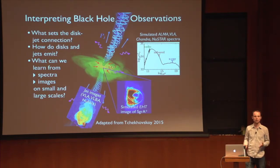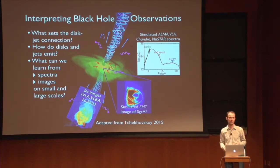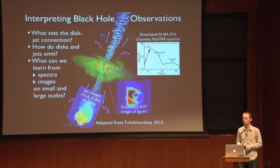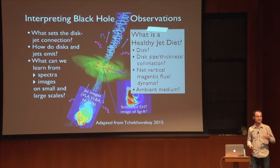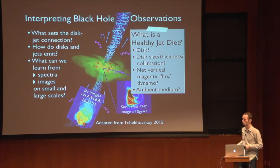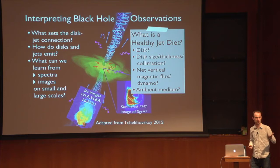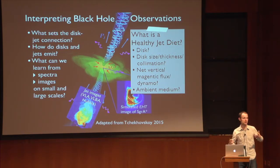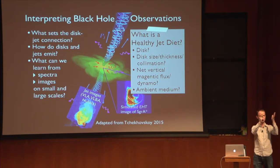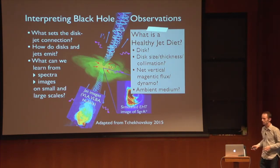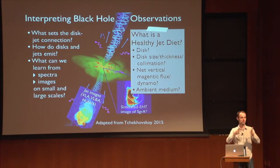When it comes to understanding the disk-jet connection, at first it was a problem how to make jets work. Now that we've figured out how they work, they're so robust there is no way to kill them, and we know that nature kills them all the time and produces them again. So I'm going to explore what makes a healthy jet diet — how do you need to feed the black hole so that it produces the jet? Do we need an accretion disk in order to have a jet? How do disk size, radius, thickness, and collimation affect the jets?